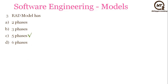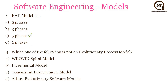The next question is: which one of the following is not an evolutionary process model? Options: Win-Win Spiral, Incremental, Concurrent Development, or all are evolutionary software models. The answer is D — all are evolutionary software models, because in all of them there will be evolution or increments of the projects.